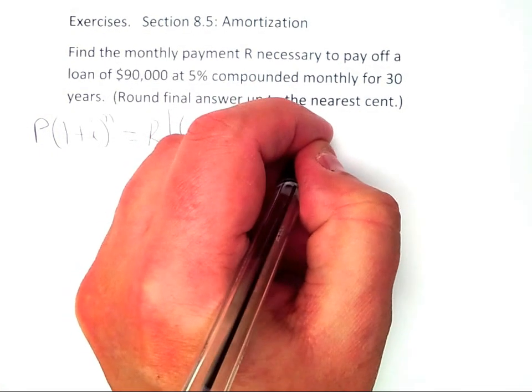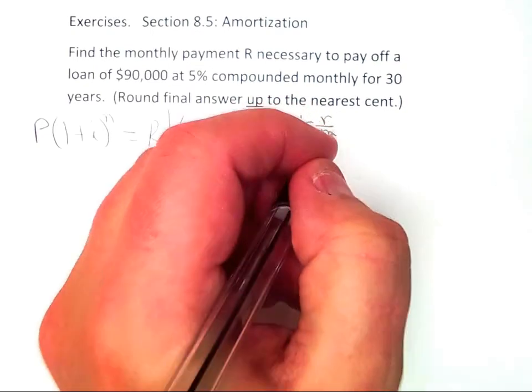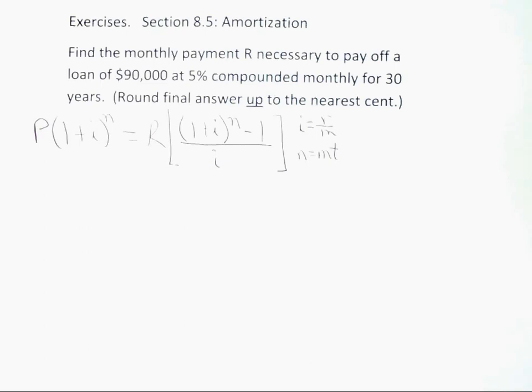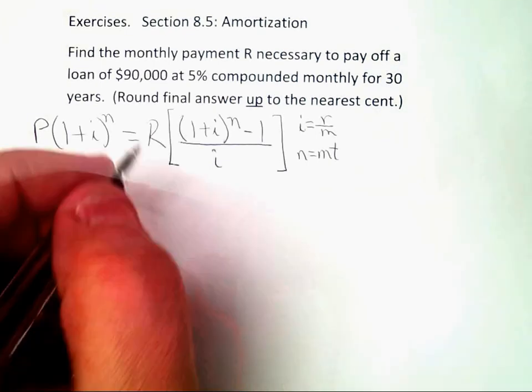We also know that little i is r over m, and little n is m times t.